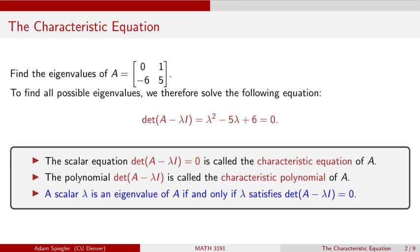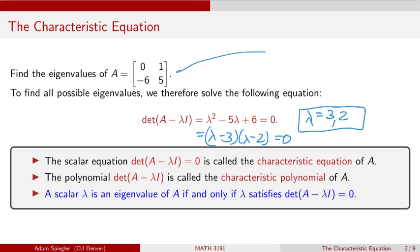Finding eigenvalues reduces to factoring the characteristic polynomial. For this example, we factor lambda squared minus five lambda plus six as (lambda minus three)(lambda minus two) = 0. This gives two roots: three and two. So matrix A has two eigenvalues: three and two.